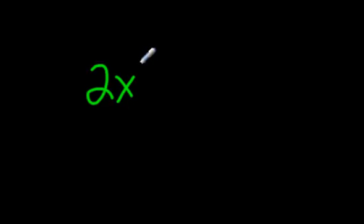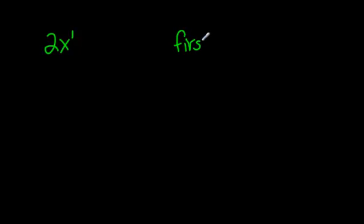Notice that there is no square there or cubed. It's just, you could put a 1 there if you want, but generally we don't even write anything up there. It's just 2x. And that is called a first degree term.